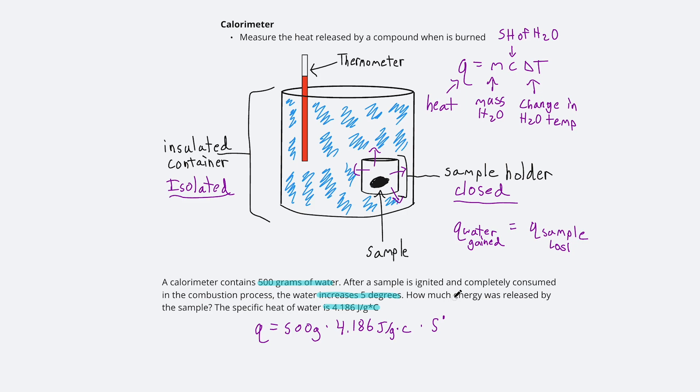We'll practice rounding when we do this because that's how you want to do it on the test. You'd be pretty safe rounding 4.186 to just 4. So 500 times 4 would be 2,000. So 2,000 times 5 would give you 10,000.